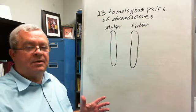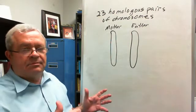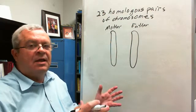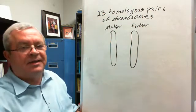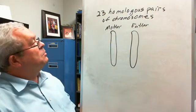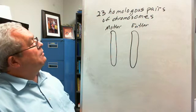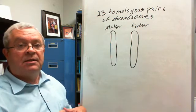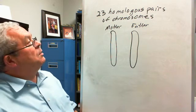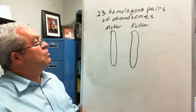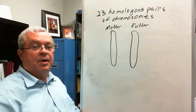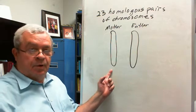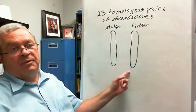We started with Mendel, we're now doing something with chromosomes, and we'll make it all fit together as time goes on. We saw that human beings have 23 homologous pairs of chromosomes. Where does half of each pair come from? Half of each pair comes from a person's mother, half from a person's father.